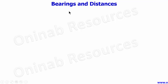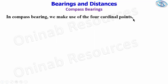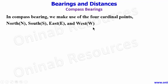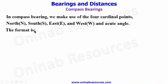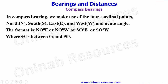Hello and welcome to this tutorial on bearings and distances. In this video we'll be looking at compass bearings. In compass bearing we make use of the four cardinal points: north, south, east, and west, and an acute angle. The format is: north theta degrees east, or north theta degrees west,